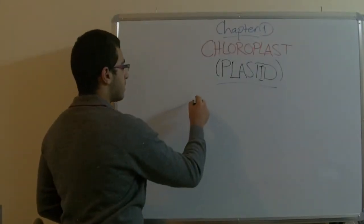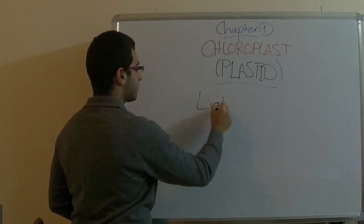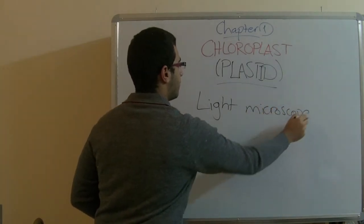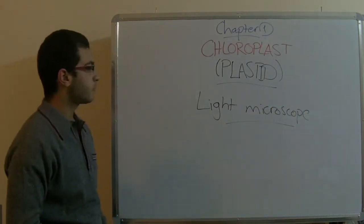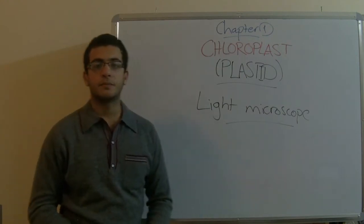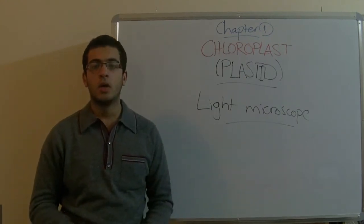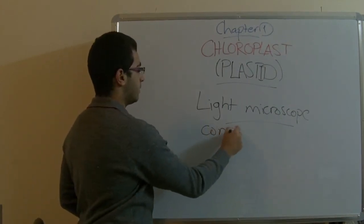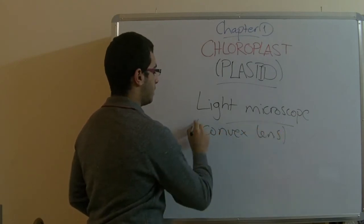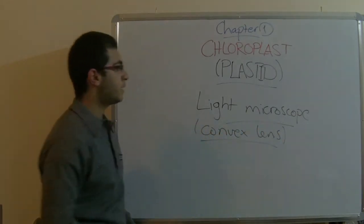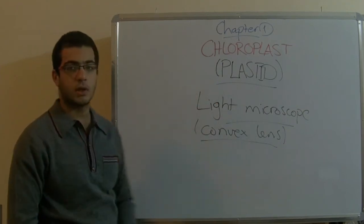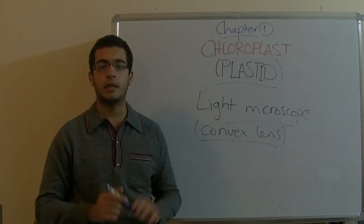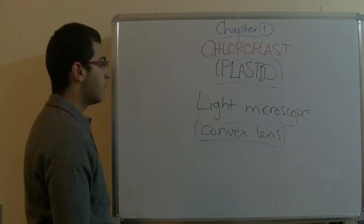When the plant cell is examined under the light microscope, the normal microscope that all of us use, it appeared as a homogenous green object or green mass with the shape of a convex lens. There isn't anything that appears more.